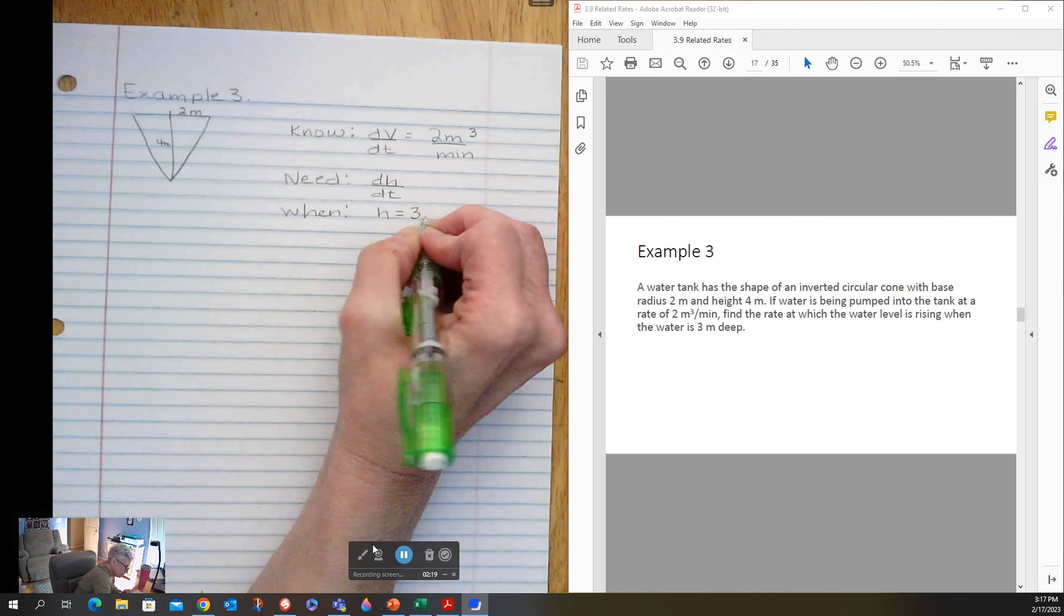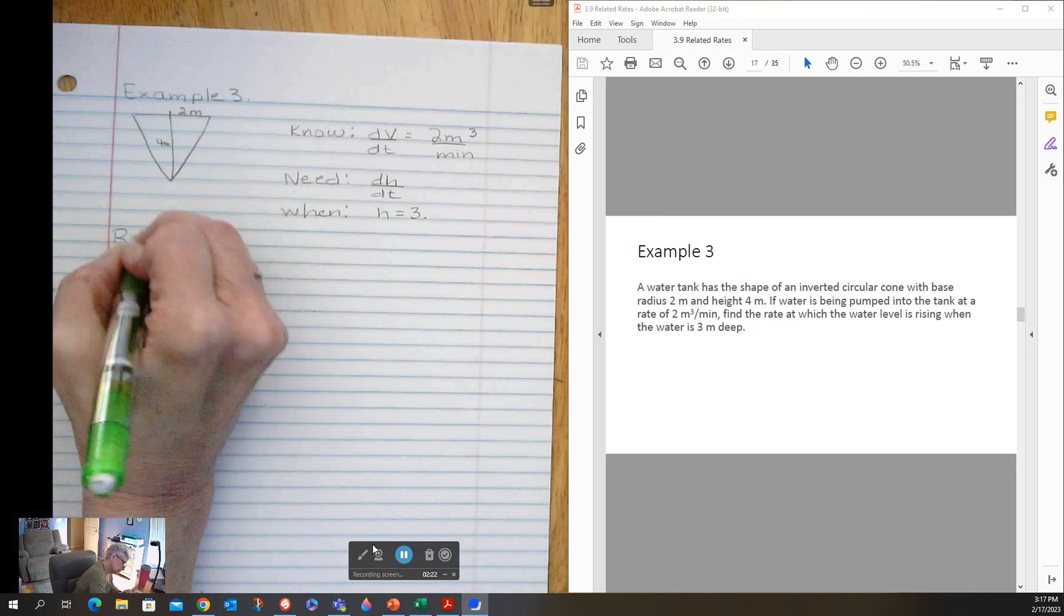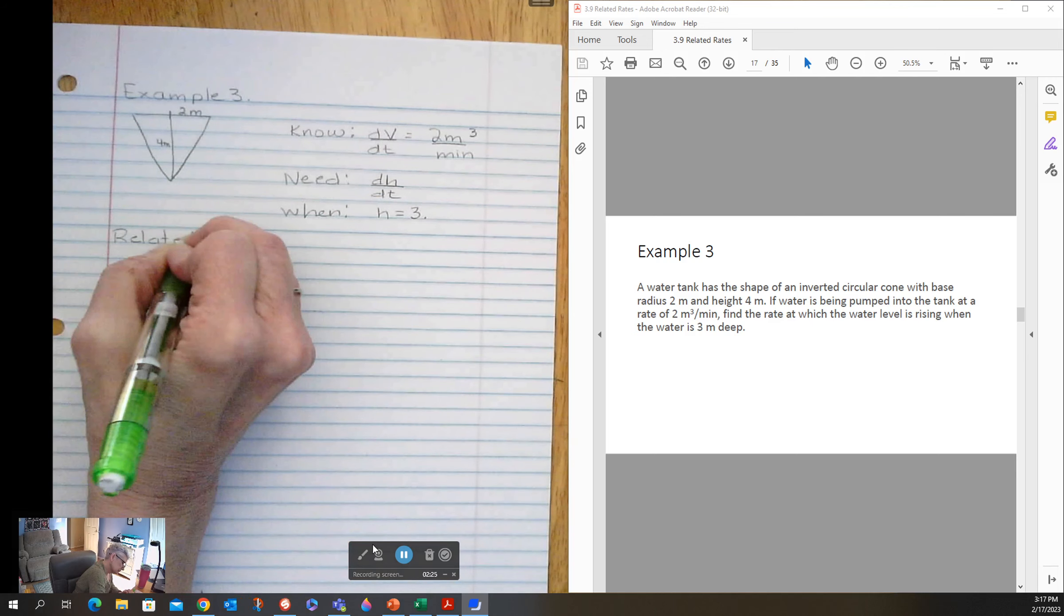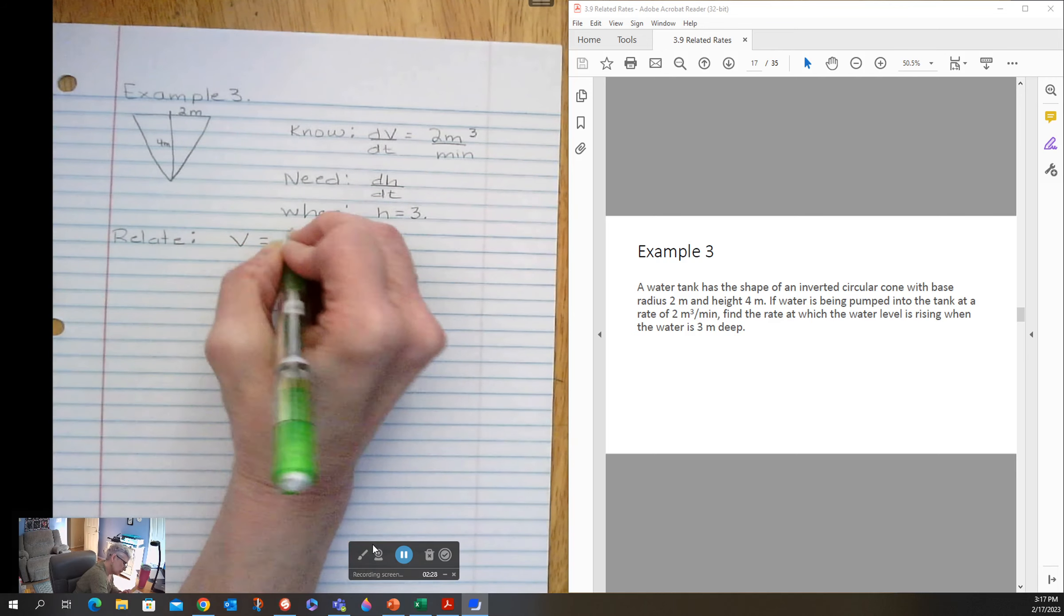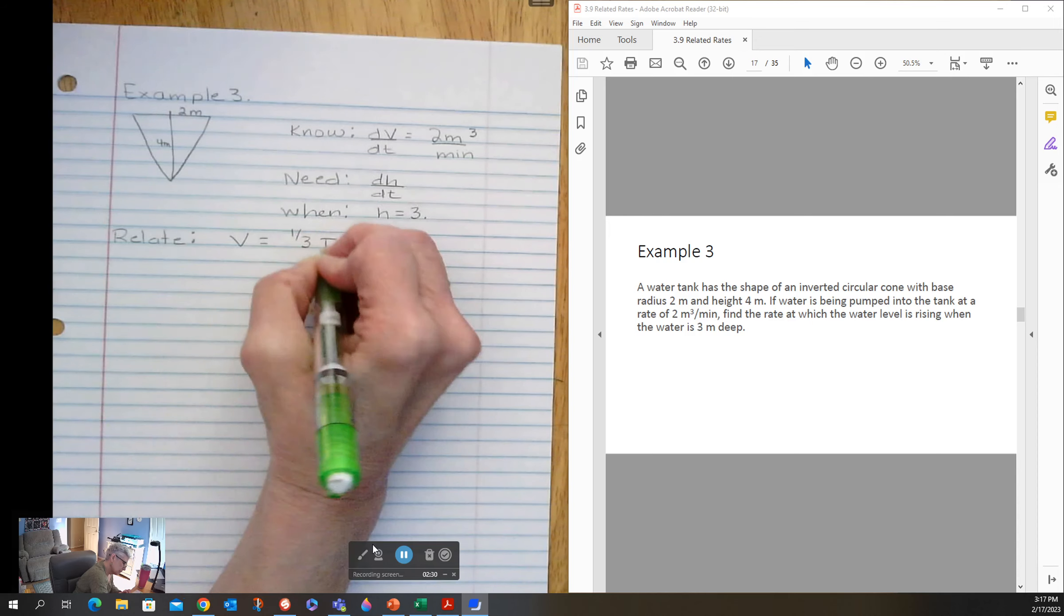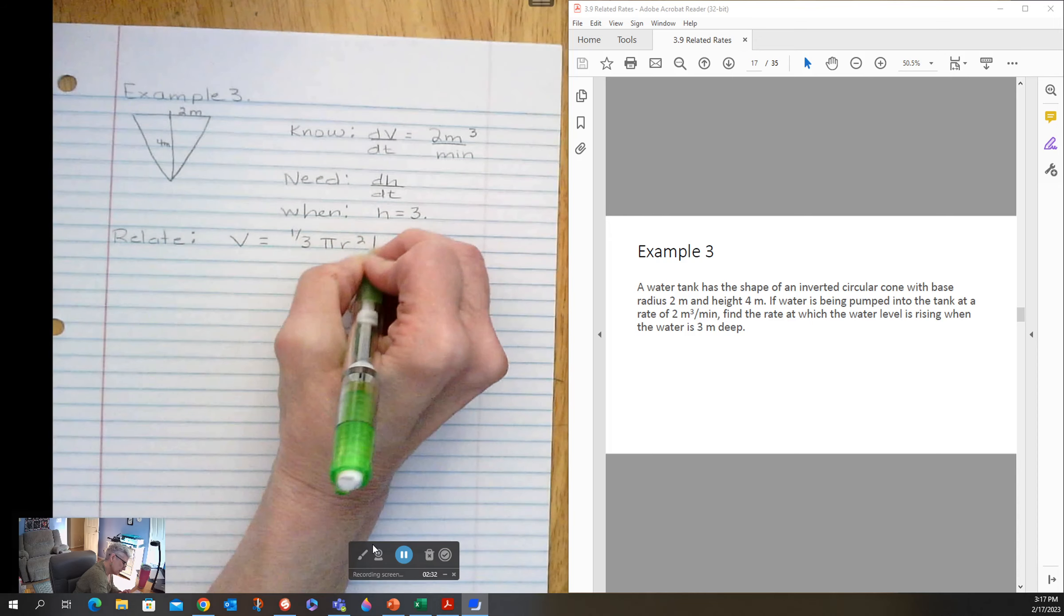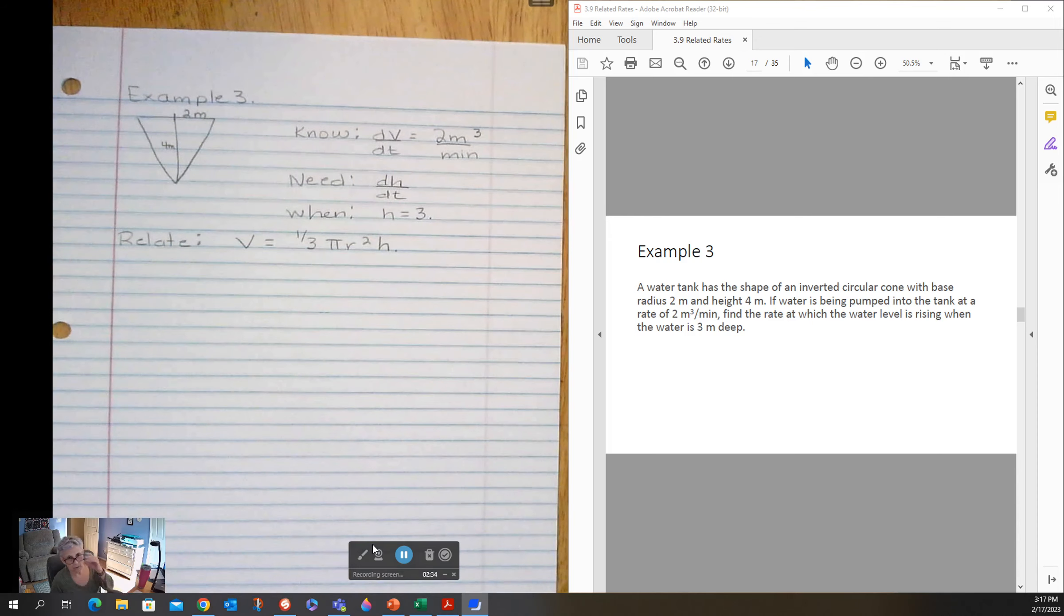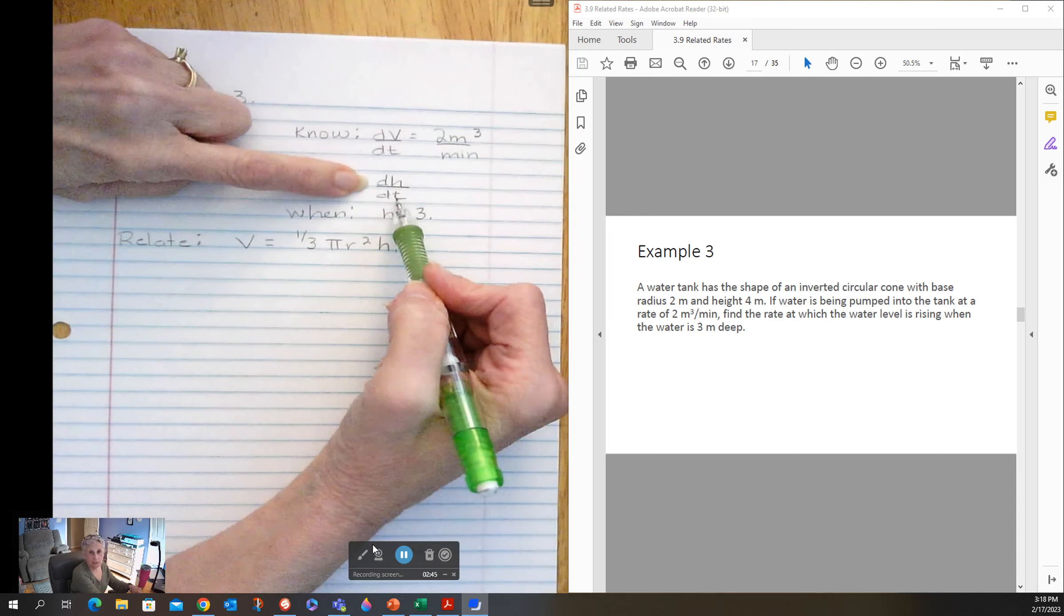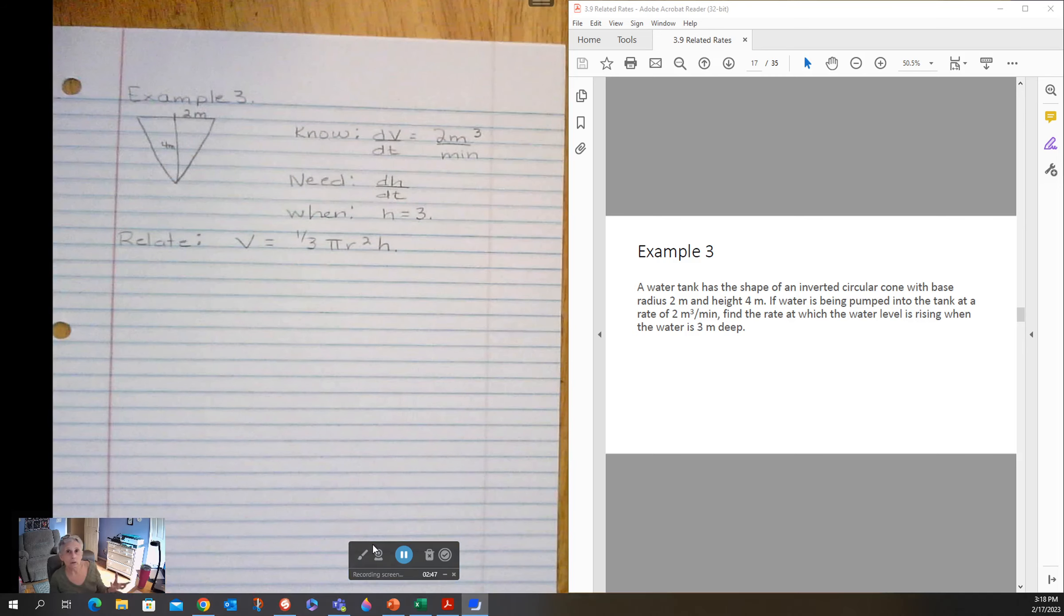The volume of a cone is one-third pi r squared h. Oh darn, it's got r's and h's in it. I would really like to have a function that only has h's in it, because my goal is to figure out dH/dt. If my goal was dR/dt, then I'd be wanting a function that only had r's in it.